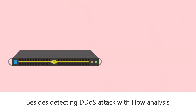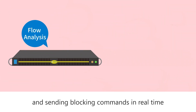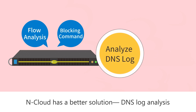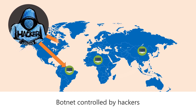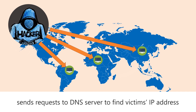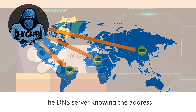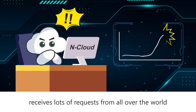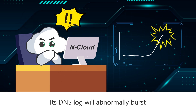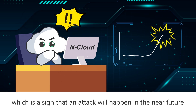Besides detecting DDoS attacks with flow analysis and sending blocking commands in real-time, nCloud has a better solution: DNS log analysis. In most cases, before a DDoS attack happens, a botnet controlled by hackers sends requests to a DNS server to find the victim's IP address. The DNS server receives lots of requests from all over the world, and its DNS log will abnormally burst, which is a sign that an attack will happen in the near future.